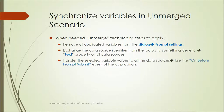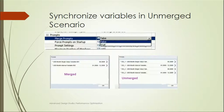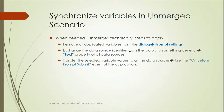In the unmerged scenario, go to the prompt dialog settings. There we can use a text property for all data sources to transport the selected variable values to all data sources, and use the 'on perform submit' event for the application. These properties can be set in the application properties.